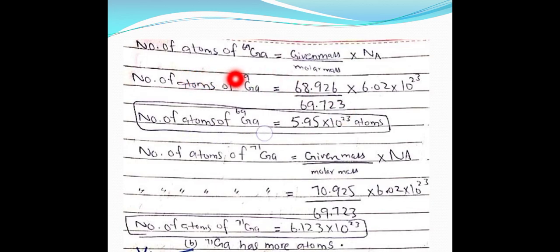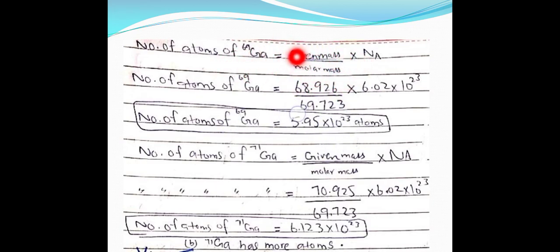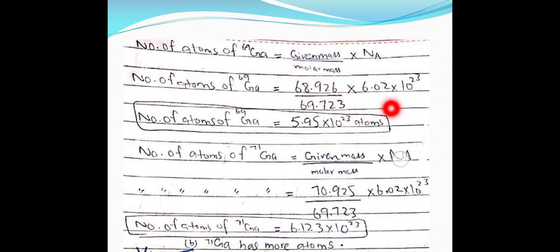To find which gallium isotope has more atoms: number of atoms = moles × Avogadro's number (6.02 × 10²³). Moles = given mass / molar mass. Using the given mass of each isotope and the atomic weight of 69.723 amu: Ga-69 gives 5.95 × 10²³ atoms, and Ga-71 gives 6.123 × 10²³ atoms. Therefore, Ga-71 has more atoms.